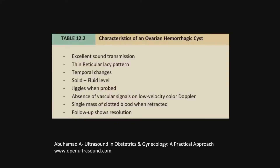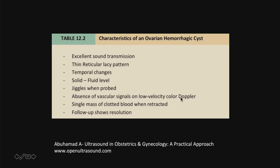These are the characteristics of hemorrhagic cysts from the online reference book: excellent sound transmission; it looks like solid tissue but it is actually a blood clot; there's a thin reticular lacy pattern; and there are temporal changes — bring the patient back and you will see the clot retract with a solid-fluid level. When you probe with a transvaginal probe, the clot itself, because it's like jello, will jiggle — a specific characteristic. It is extremely important not to have any vascular signals within, because that would rule out a hemorrhagic cyst or hemorrhagic corpus luteum. Follow up to confirm resolution.